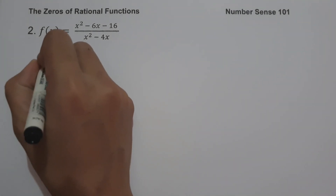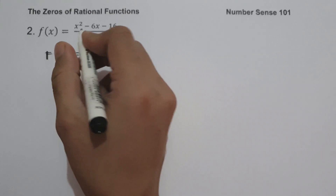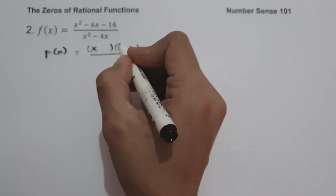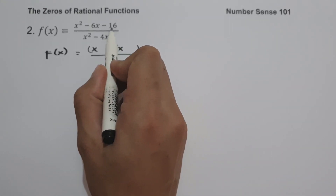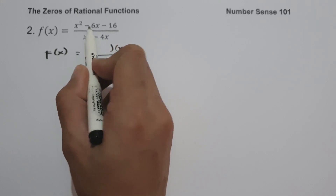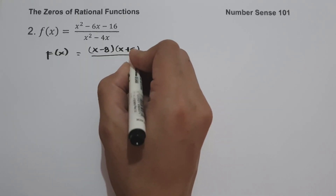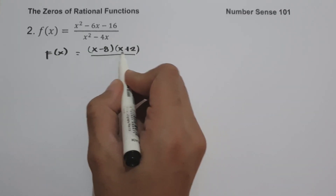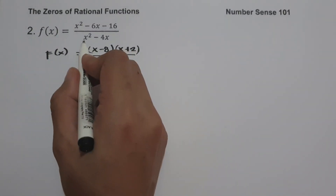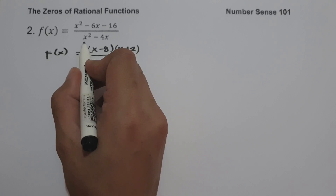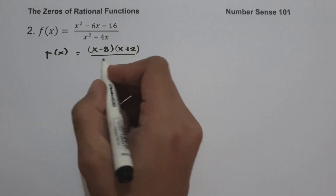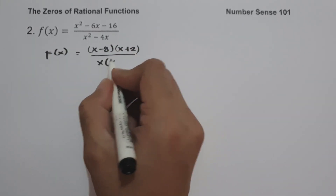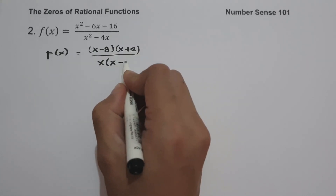Let us find the factors of the numerator. The factors of x squared are x and x. We need two numbers that multiply to negative 16 and add to negative 6 — those are negative 8 and positive 2. For the denominator, the greatest common factor between x squared and negative 4x is x, giving us x times quantity x minus 4.